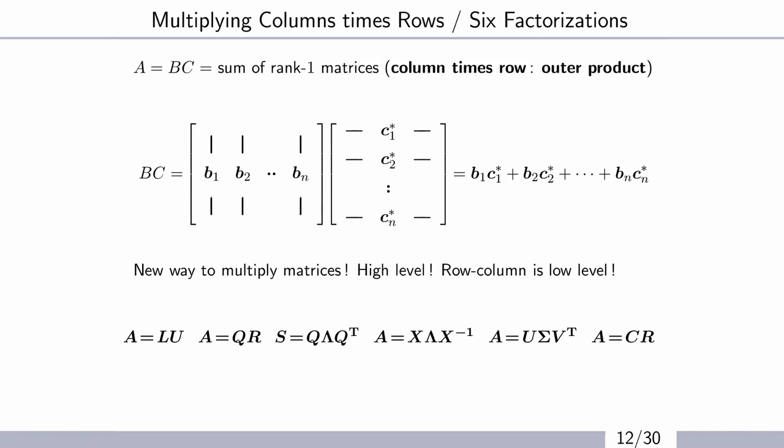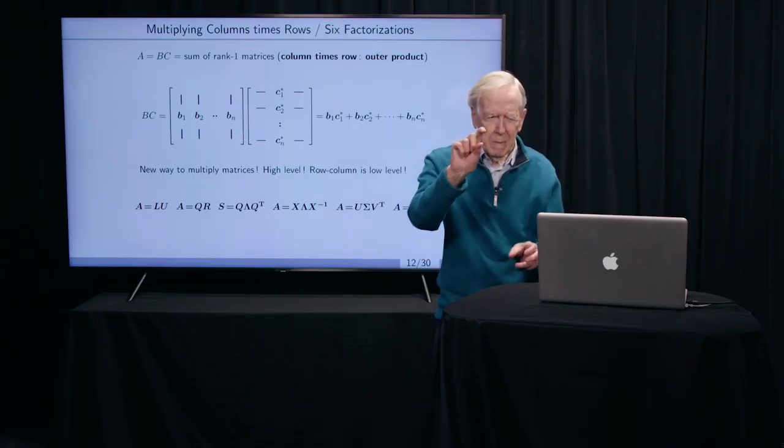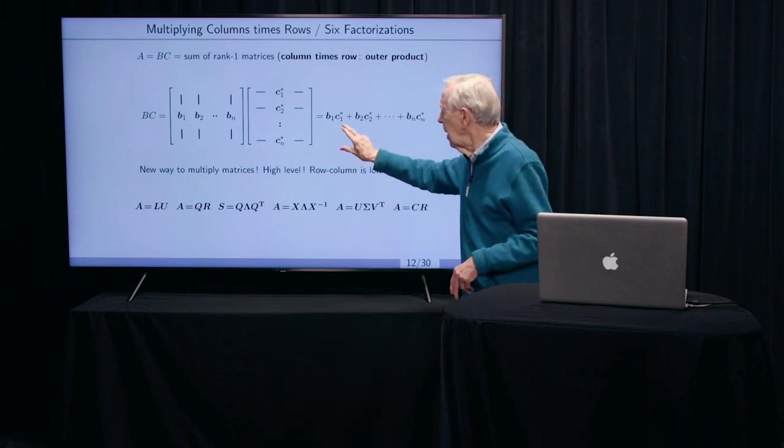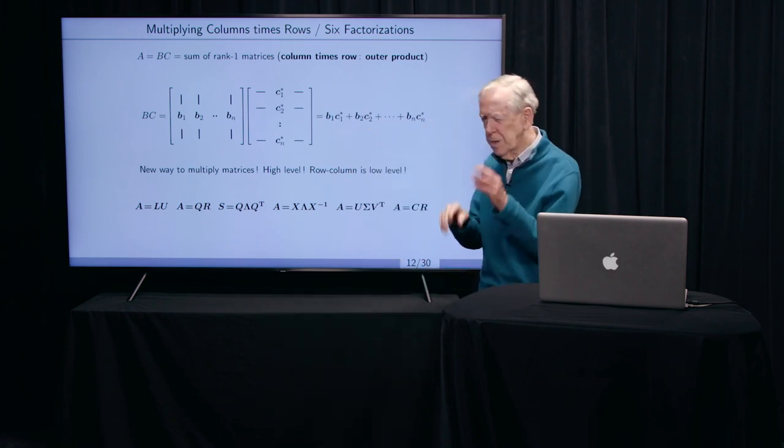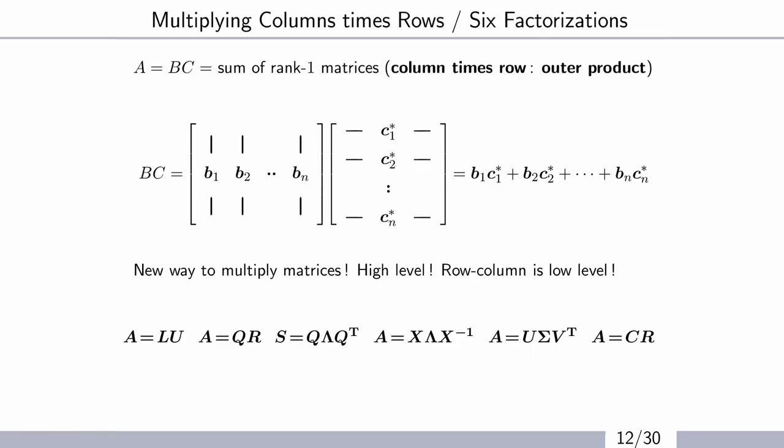Now, a column times a row, we've seen that once for that rank one matrix. Do you remember I said that those rank one matrix, one column times one row, are the building blocks? Well, here is the building. Those are n of those blocks. A column times a row, a column times a row. And here is a reminder, we're coming up to A equal LU, the first one. Get on with it, Professor Strang.